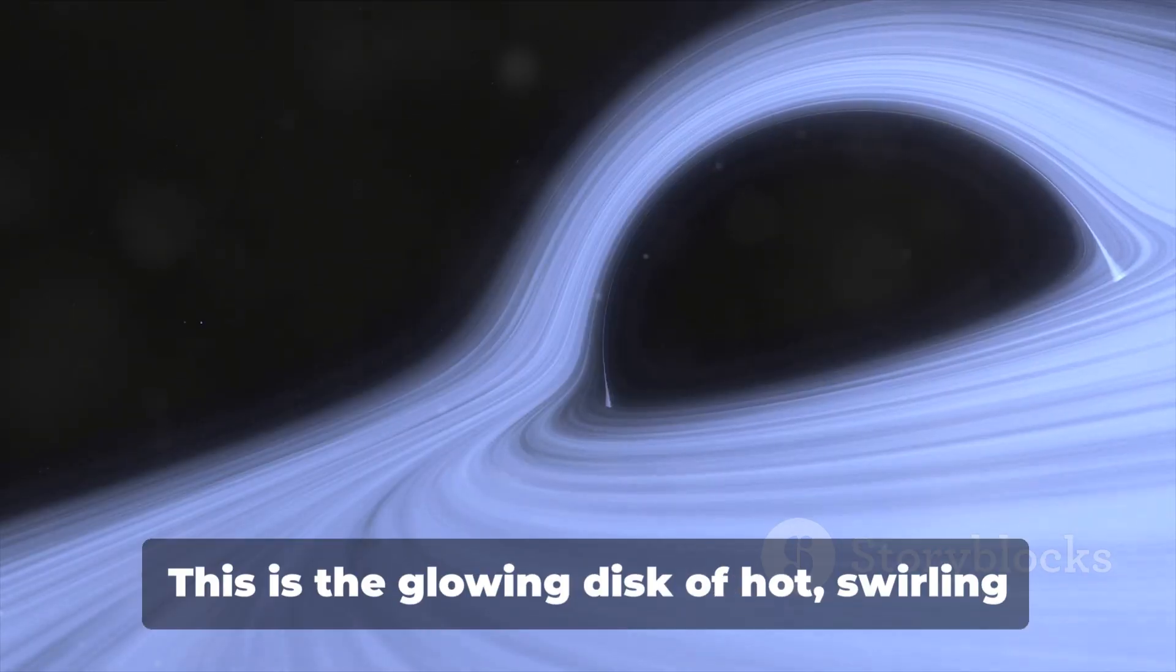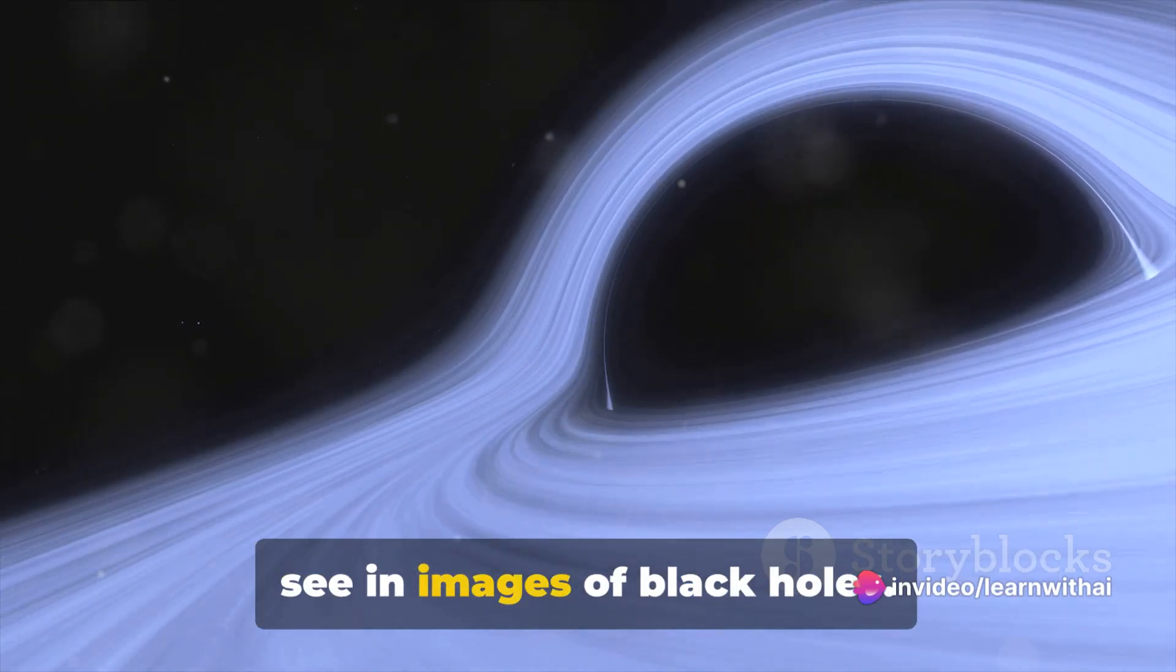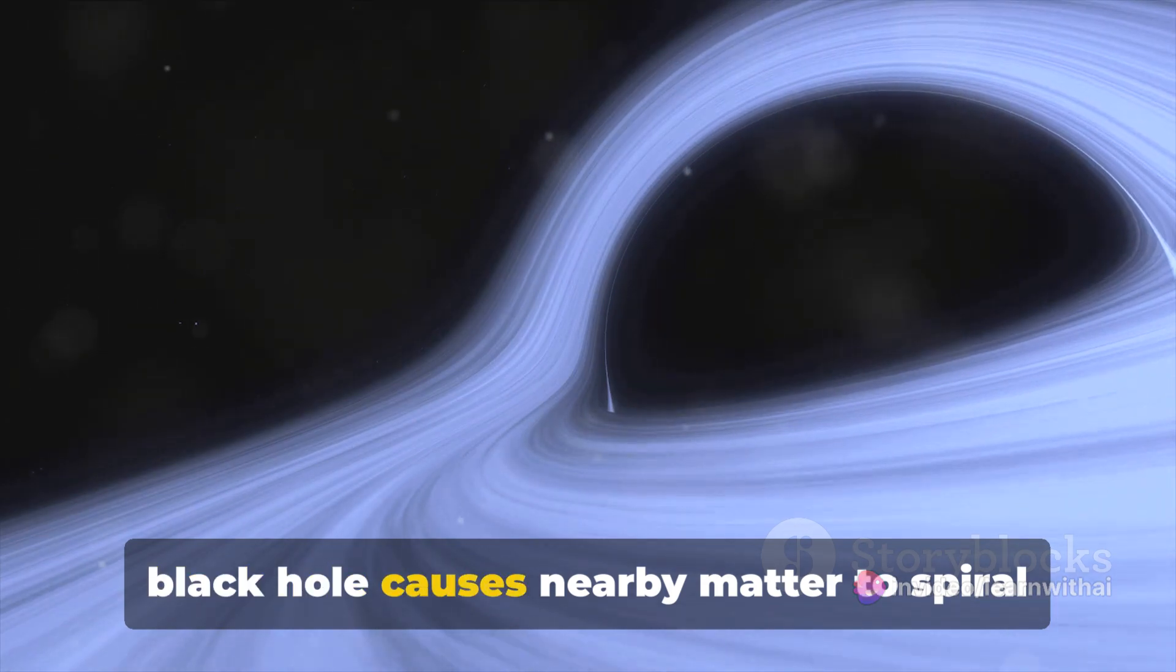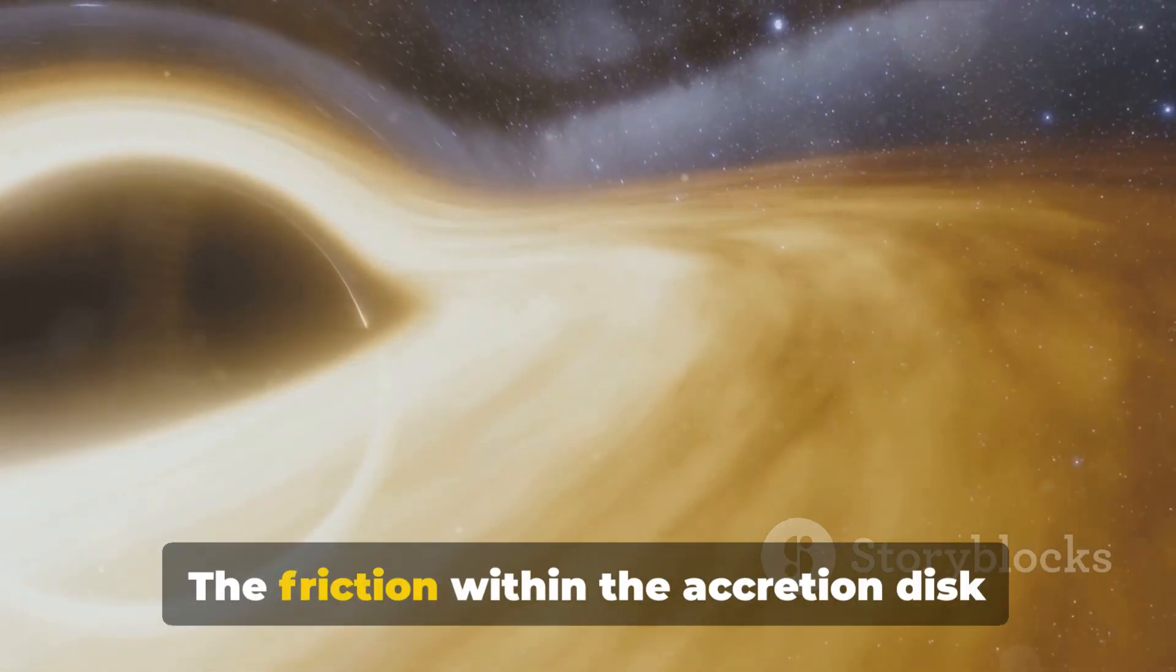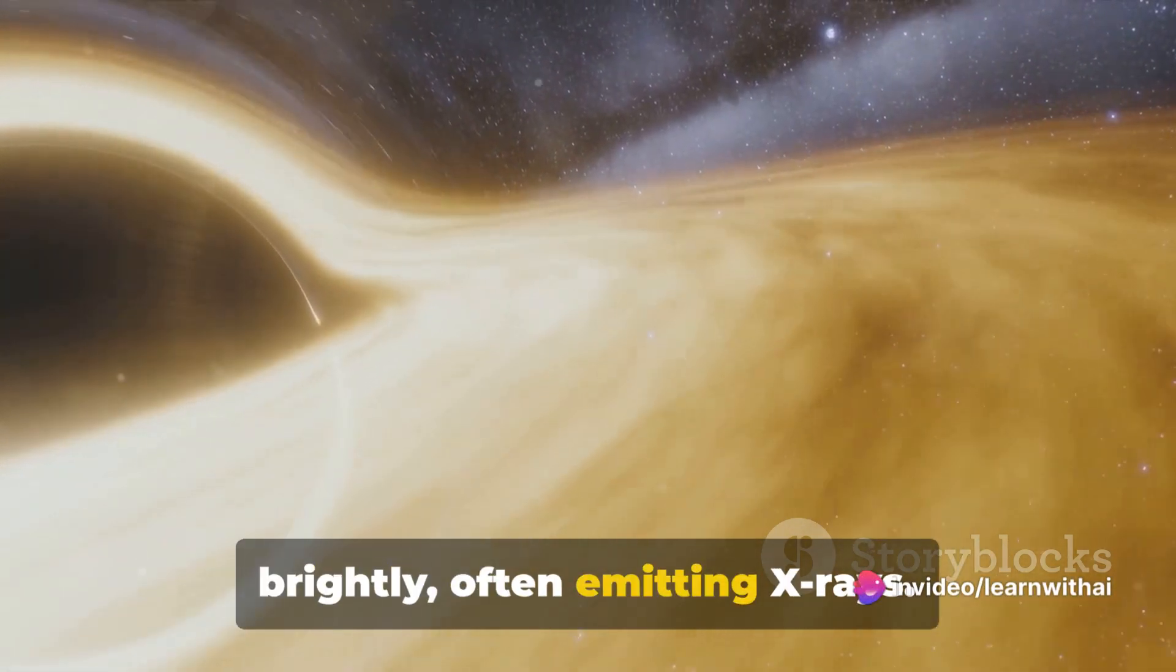Lastly, there's the accretion disk. This is the glowing disk of hot, swirling gas, dust, and other matter that you often see in images of black holes. The intense gravitational pull of the black hole causes nearby matter to spiral inwards, forming this disk. The friction within the accretion disk generates so much heat that it glows brightly, often emitting x-rays.